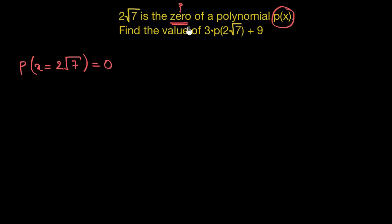So basically zeros are those particular values of x which would give us zero as the value of this polynomial. So this means p(2√7) is nothing but equal to zero.